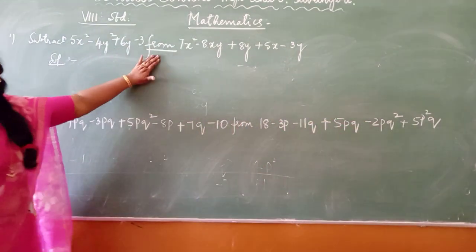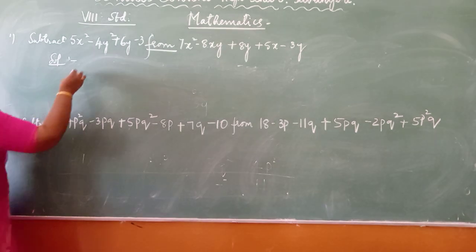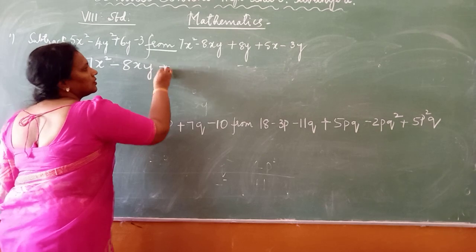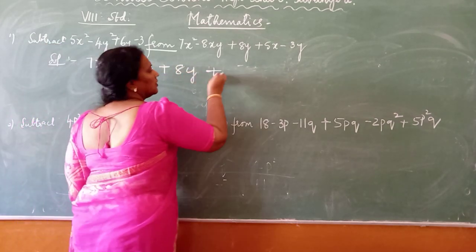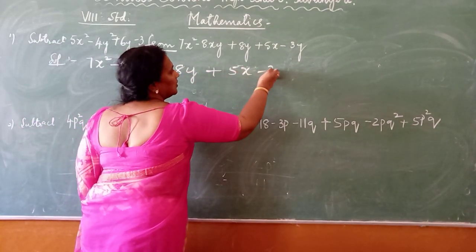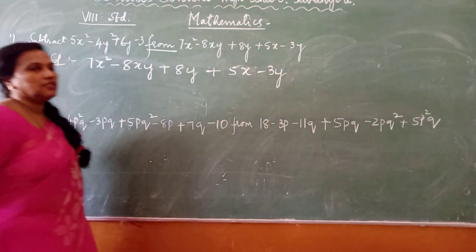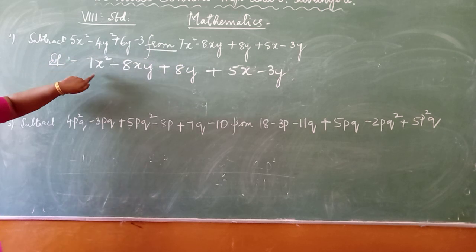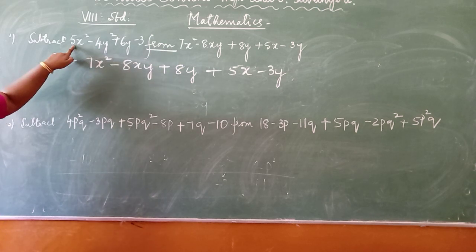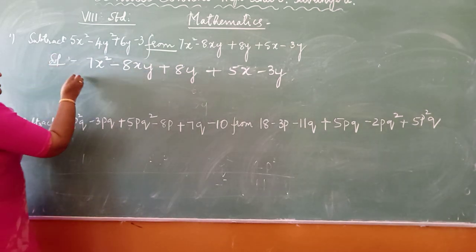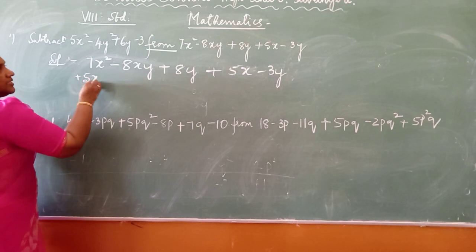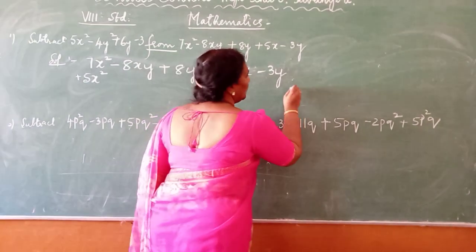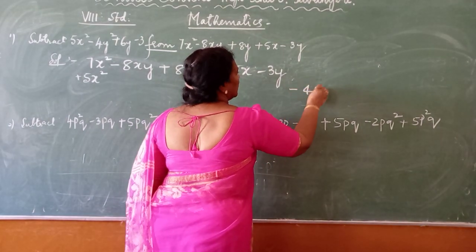To remember what you have to write first, it is given you have to write. Then second expression, the like terms should be written one below the other. You can't write 4y's part here. What term you have to write? It is 5x's part, plus 5x's part. With the sign you write. Where should I write minus 4y's part? Is there 4y's part alone? It is minus 4y's part.